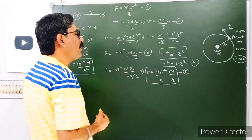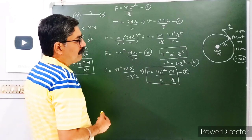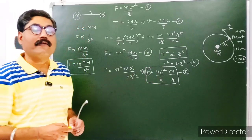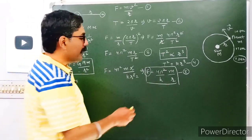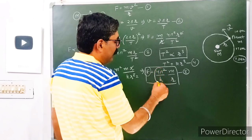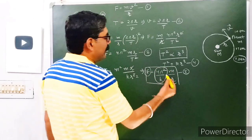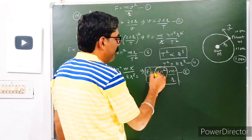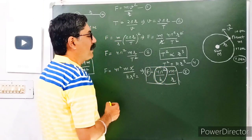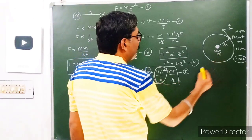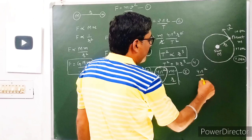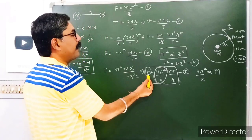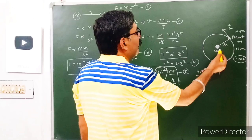This is the centripetal force required to move the planet around the sun in a circular orbit of radius r. What is the source of this centripetal force? The source is the gravitational pull of the sun. So the constant factor 4π²/k must depend upon some parameter of the sun. As you can see, this force depends on the mass of the planet m, so 4π²/k must be proportional to some parameter of the sun — and that parameter will be the mass of the sun, capital M, because the source of this centripetal force is the gravitational pull of the sun.